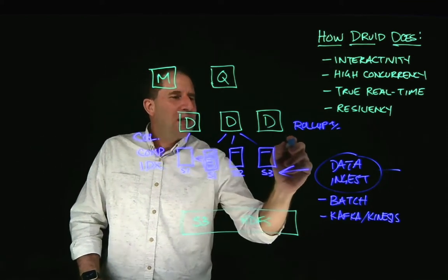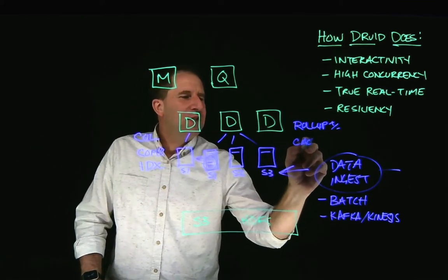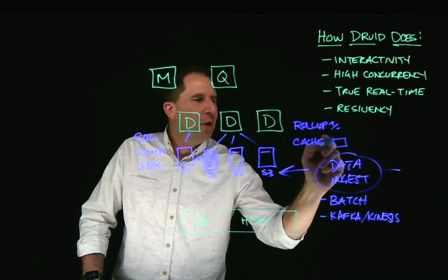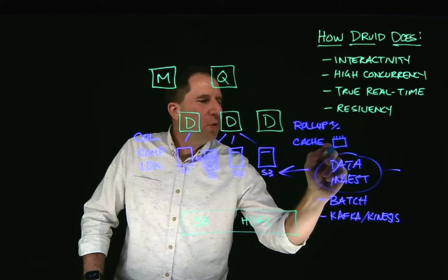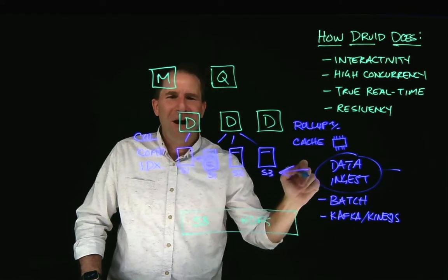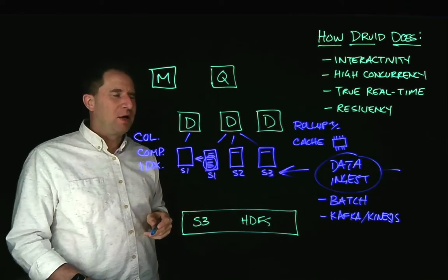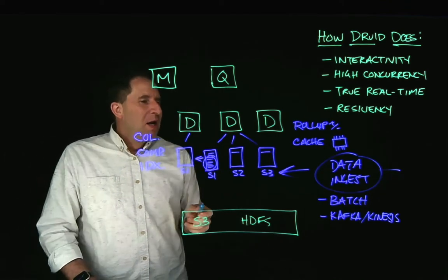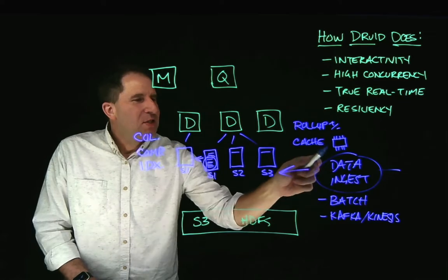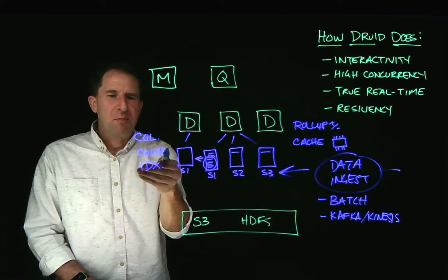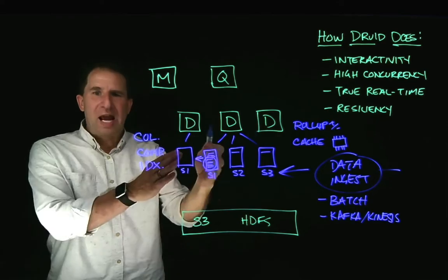The other thing that happens here during data ingest is data is brought in to the cache, memory cache on the data nodes. So I'll draw a little old-school memory chip, the kind that I used to plug into PCs back in the day. We're talking the late 80s here. When data comes in, it's held in cache while all of these things happen to it, columnarized, compressed, automatically indexed, and partitioned.